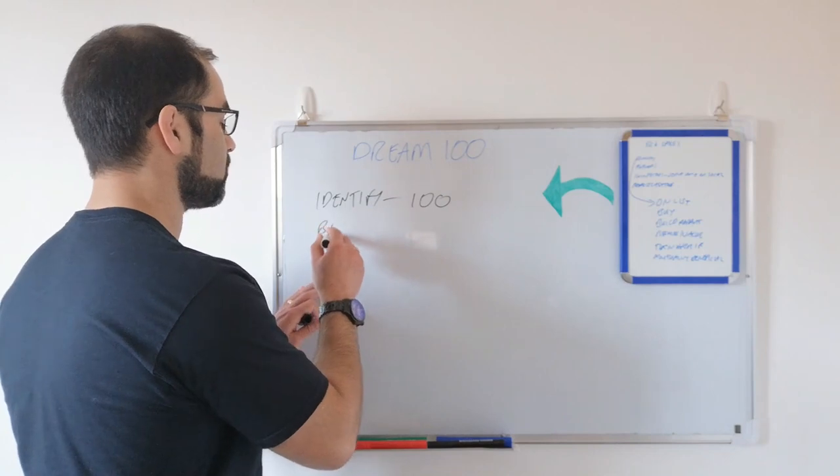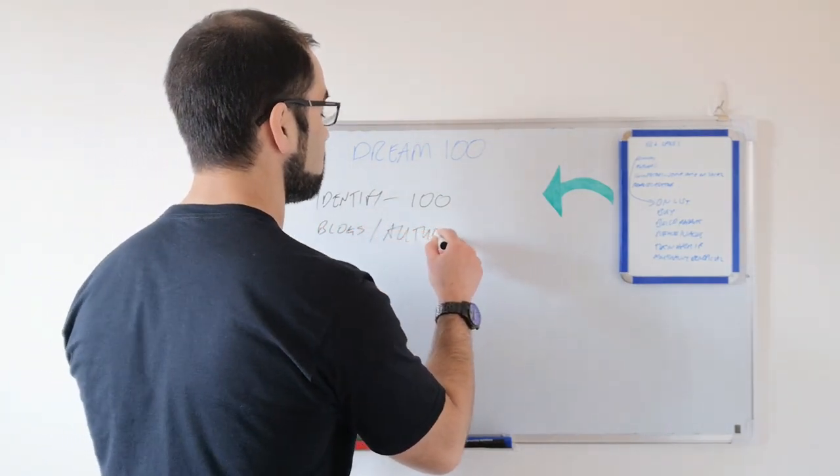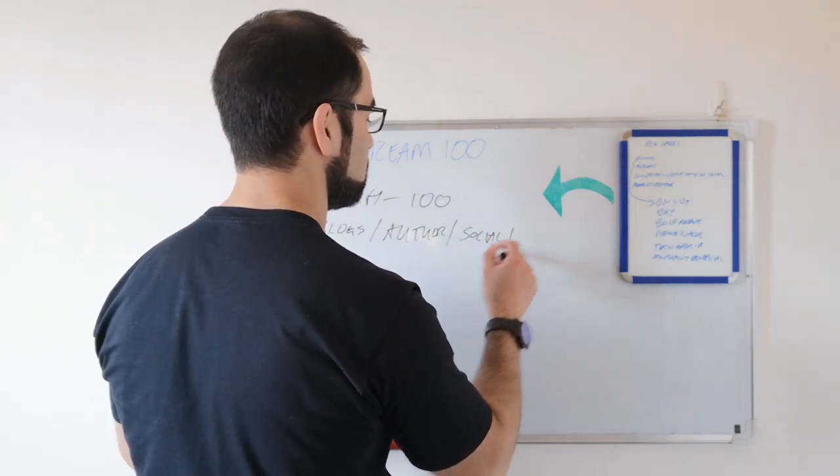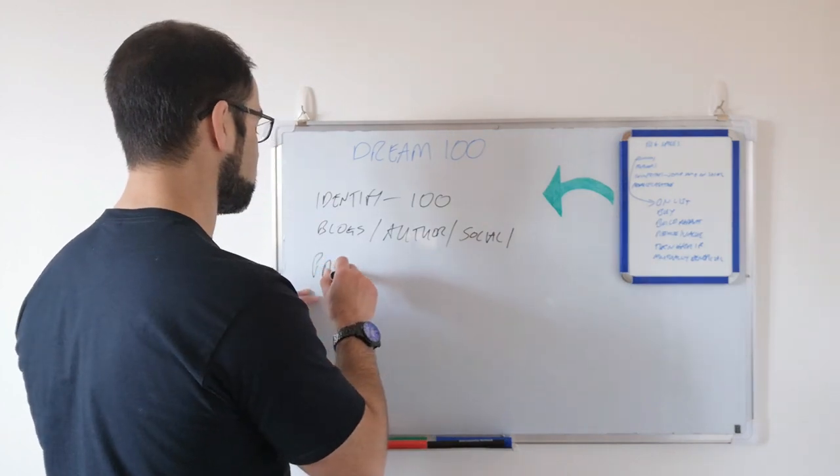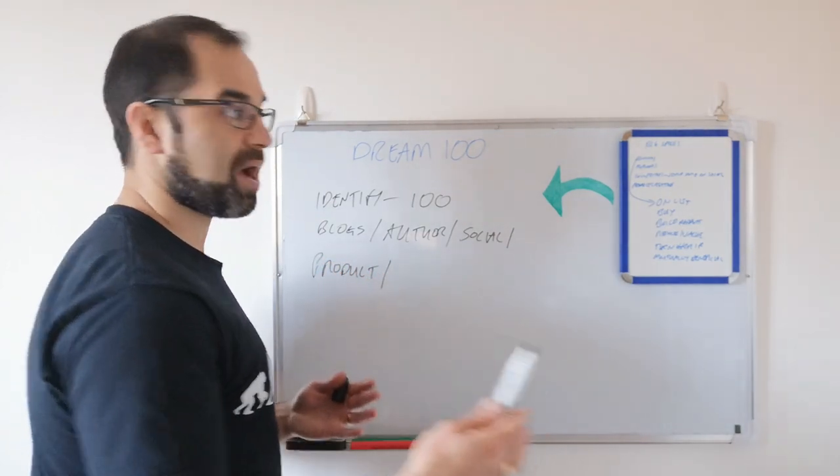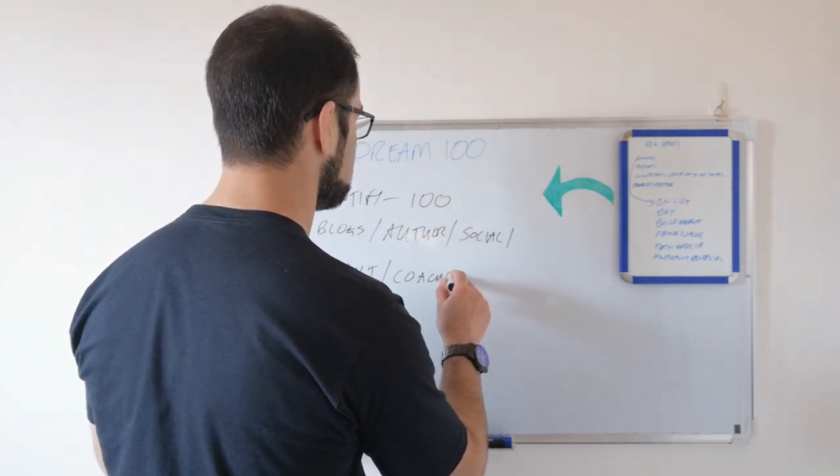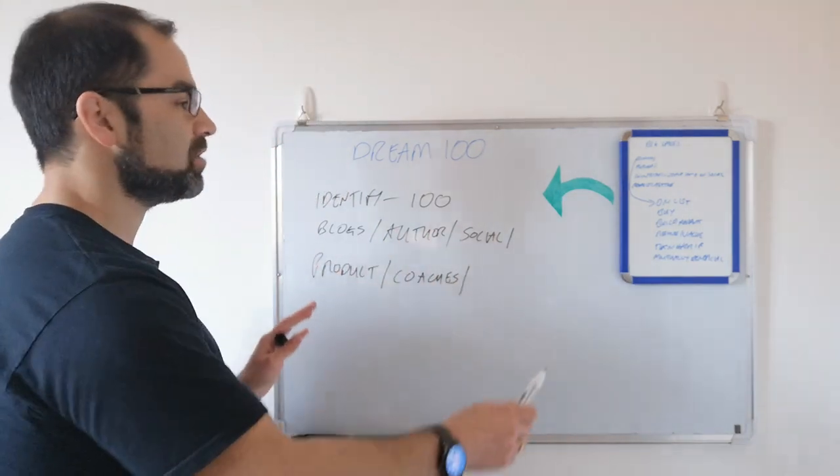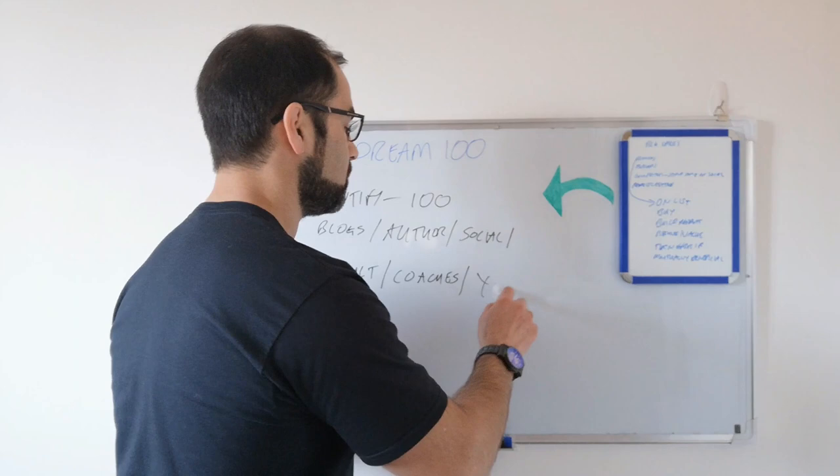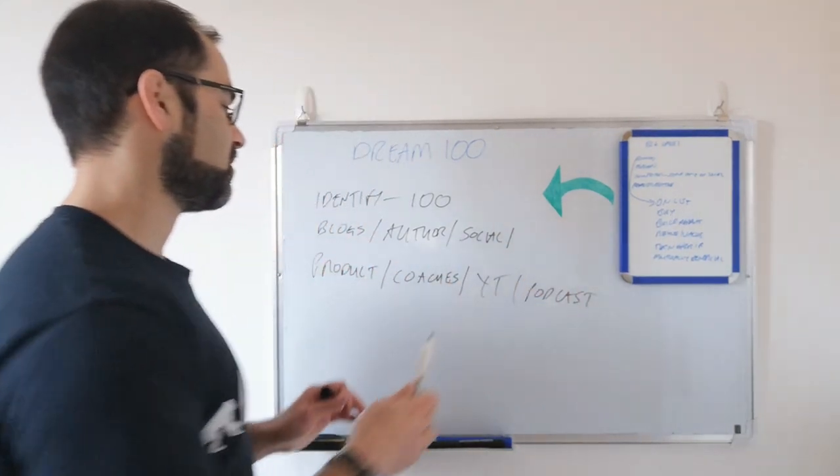For example, you may look at people who have got the most successful blogs, authors who wrote a bestselling book to your audience, social media followings, product creators. Is there someone with a hugely popular digital product that your audience is buying in droves? What about coaches or consultants? YouTube channels, podcasts—there's a whole list you can go through. Those are great places to start.